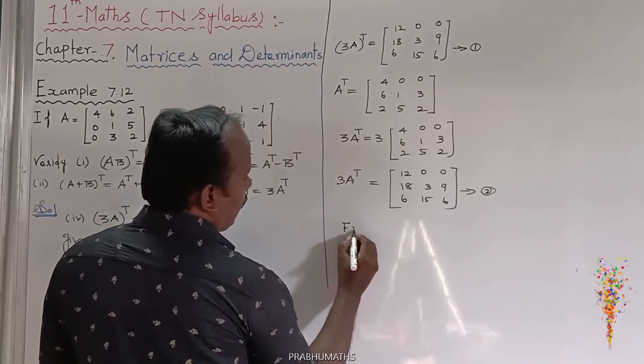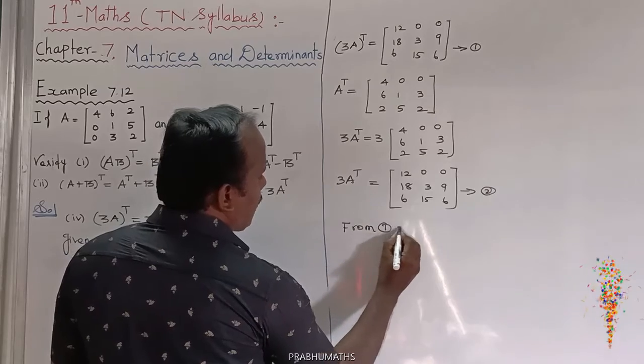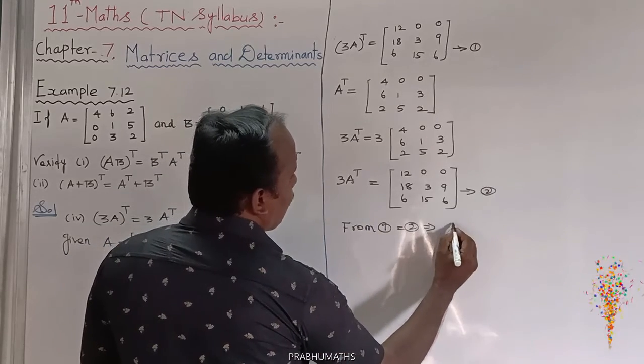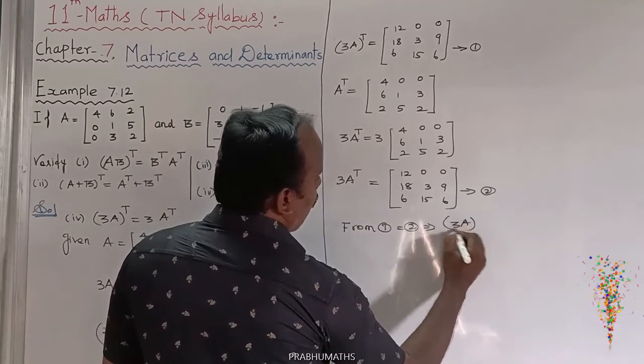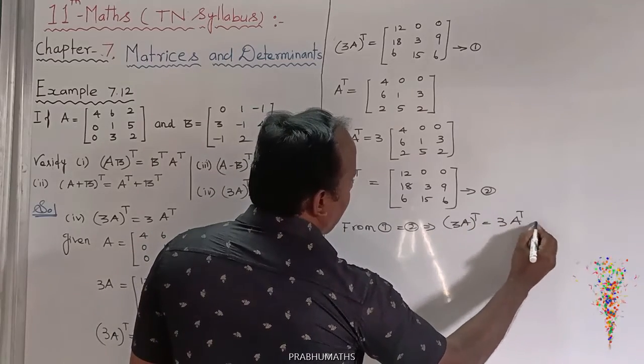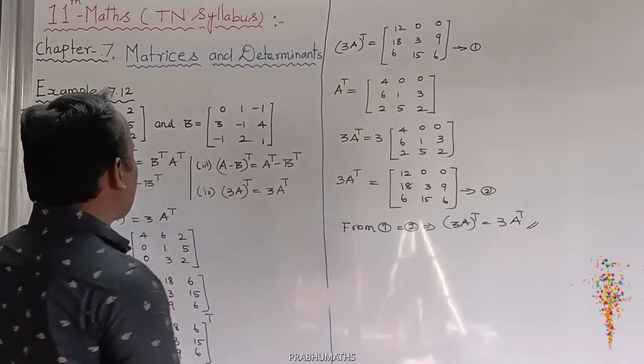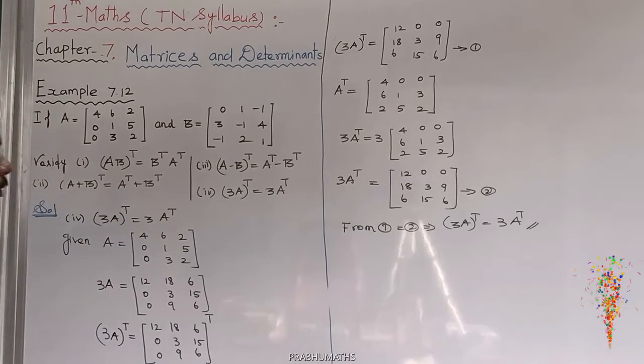So from equation 1 is equal to 2, which implies 3A the whole transpose is equal to 3 times of A transpose. So we get the solution.